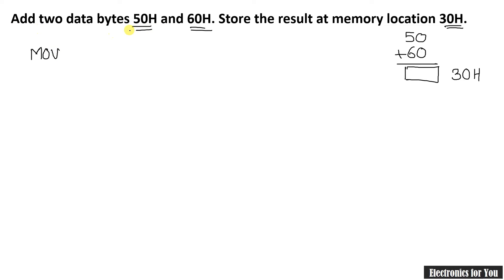One number must be in the accumulator, so I am taking one number into the accumulator. I am writing: MOV A, #50h. Here 50h is a data byte — it is a number — and as per the rule we use the hash symbol, which means immediate addressing mode. The accumulator now contains the value 50h.